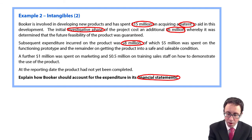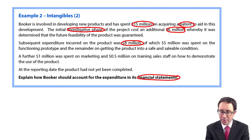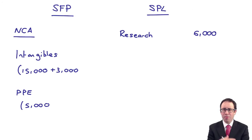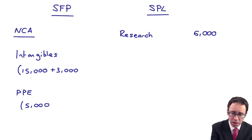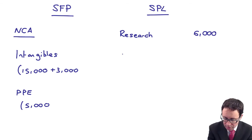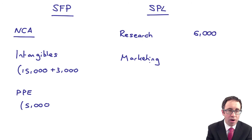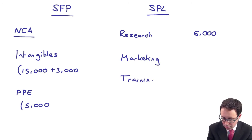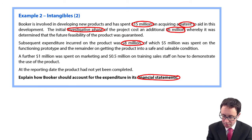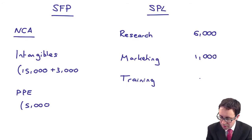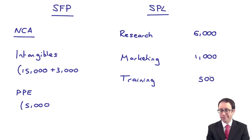It then says $1 million was spent on marketing and $0.5 million on training sales staff on how to demonstrate the use of the product. We might get some future economic benefits from that, but we're not going to be able to measure it reliably. So those are expenses: marketing $1,000,000 and training $500,000.